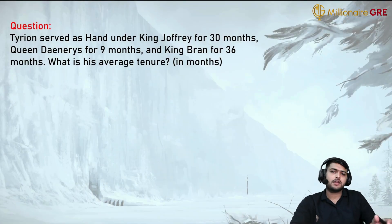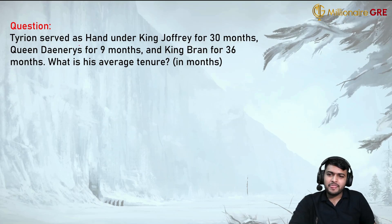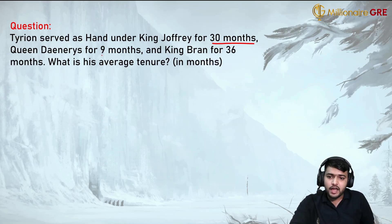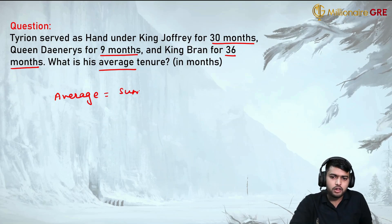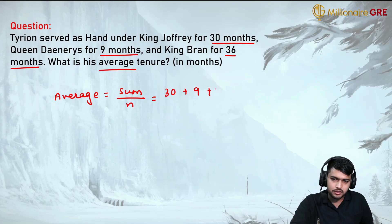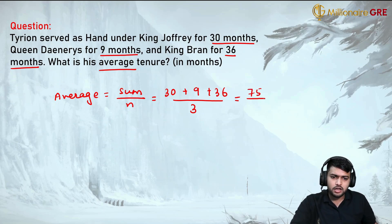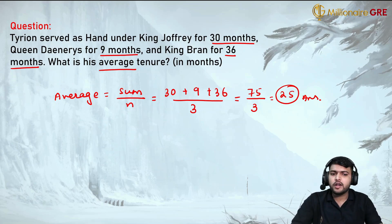Now I want you to pause the screen and give this question a try. We are told Tyrion served as hand under King Joffrey for 30 months, Queen Daenerys for 9 months, and King Bran for 36 months. What is his average tenure? Average is the same as mean. There are three numbers: 30, 9, and 36. The sum is 75, and 75 divided by 3 gives 25. So his average tenure is 25 months.